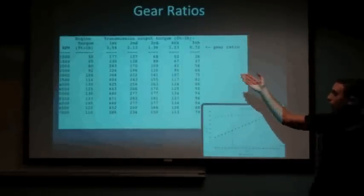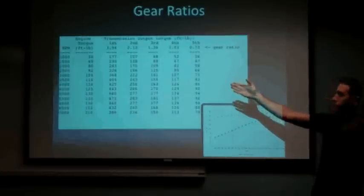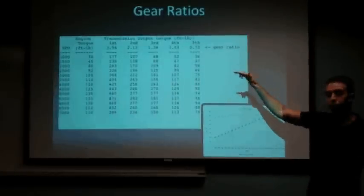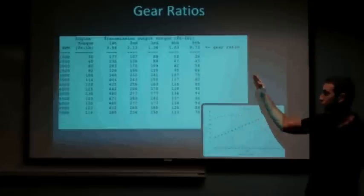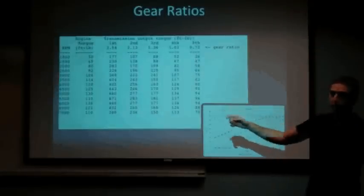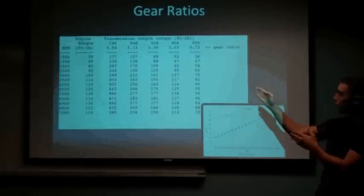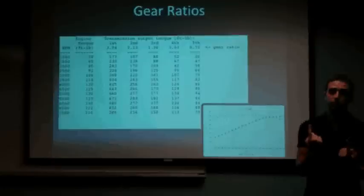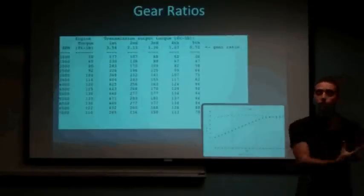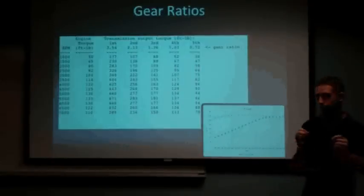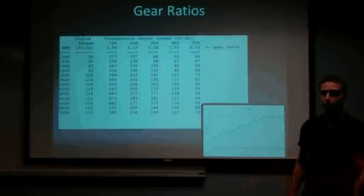On our first gear, we have the highest numerical value, in this case 3.54. As you can tell, the torque increases at a much faster rate than the other gears, with less RPMs. Once you get to about the fourth gear, we have almost a one-to-one gear ratio. What that means is that the power being driven from the engine is being transferred directly into the axles.